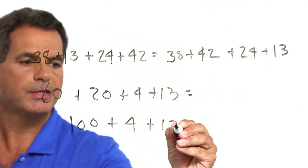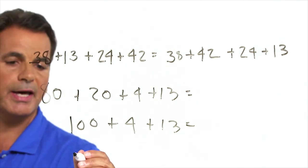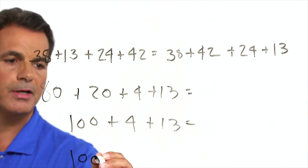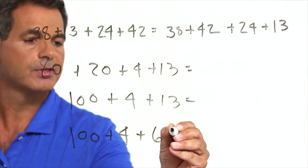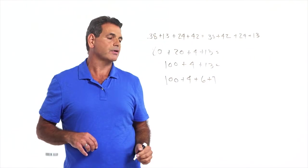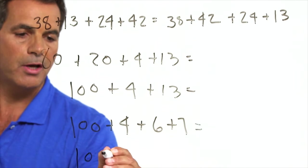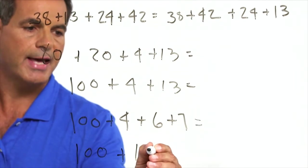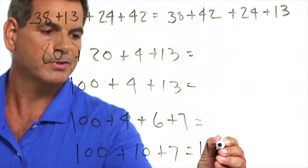80 plus 20 is 100, plus 4, plus 13. And then they can decompose the 13 to get 100 plus 4, plus 6, plus 7. See what I did? I decomposed the 13 to 6 and 7. Why? To make a 10. This equals 100 plus 10 plus 7 equals 117.